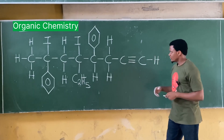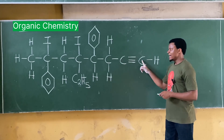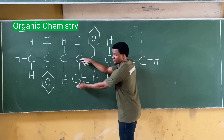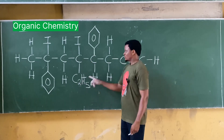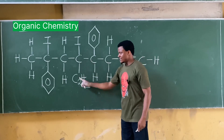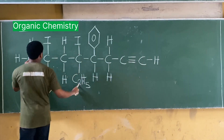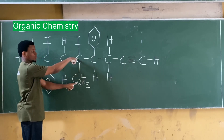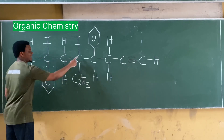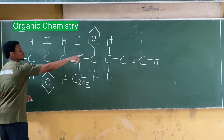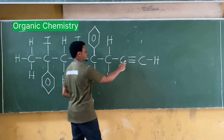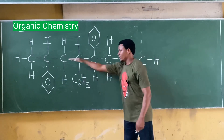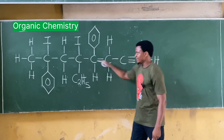Starting from one end: one, two, three, four, five — there are two carbon atoms here (C2), so five plus two gives you seven. Starting from the other end: one, two, three, four — four plus two gives you six. But going straight through, I count one, two, three, four, five, six, seven, eight.